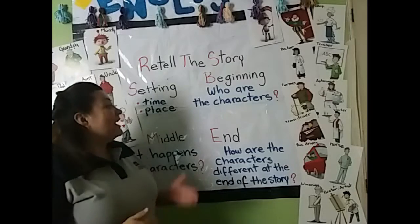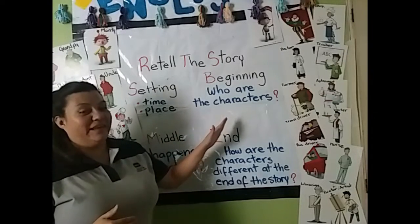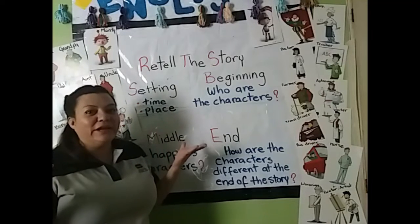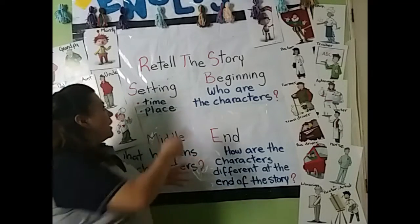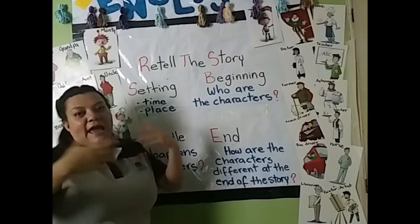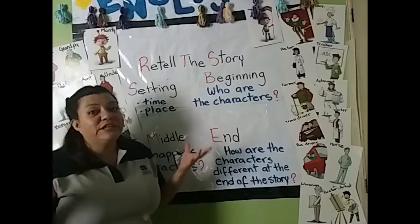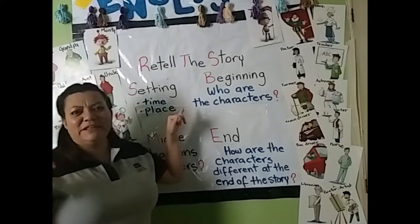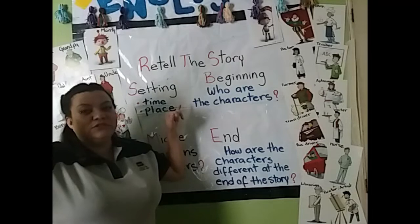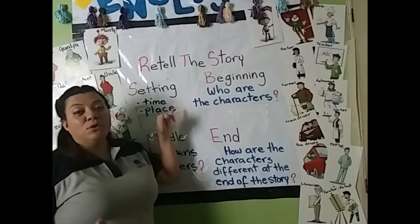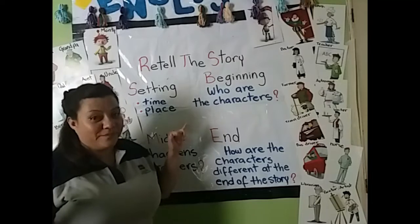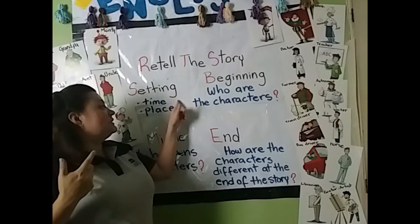I'm going to explain two parts of the story: the setting and the beginning. In the setting, you have to know about the time and the place that the story is going to be set — that's why it's called setting. The place can be in a forest or in a castle, depending on the story you are reading. And the time can be the year — for example, if we're reading a book set in the future, it can be in 2023, or a book of the past, it can be in the 1900s. This is what is explained in the setting: the time and the place.